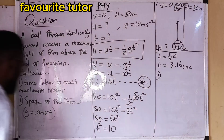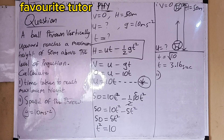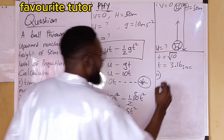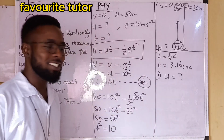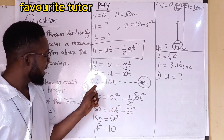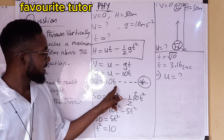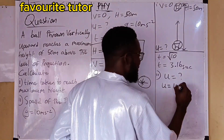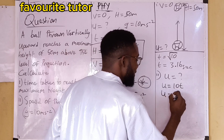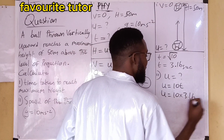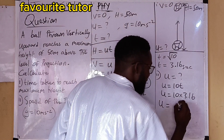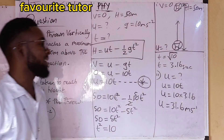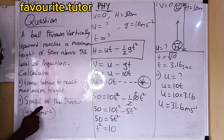For part two, we are looking for the speed of the throw, which is the same as the initial velocity. From equation 'star', u = 10t. Substituting t = 3.16 seconds: u = 10 × 3.16 = 31.6 meters per second. This is the answer for the speed of the throw.